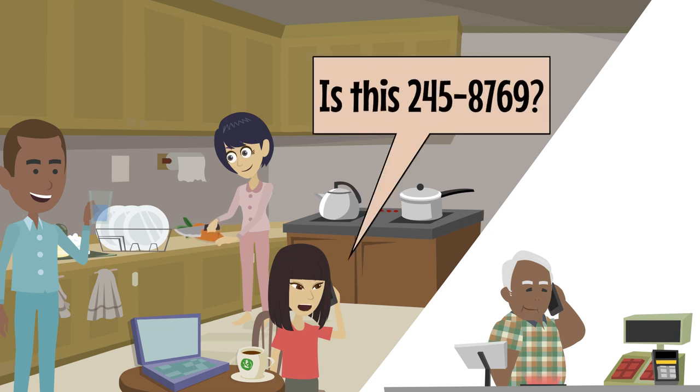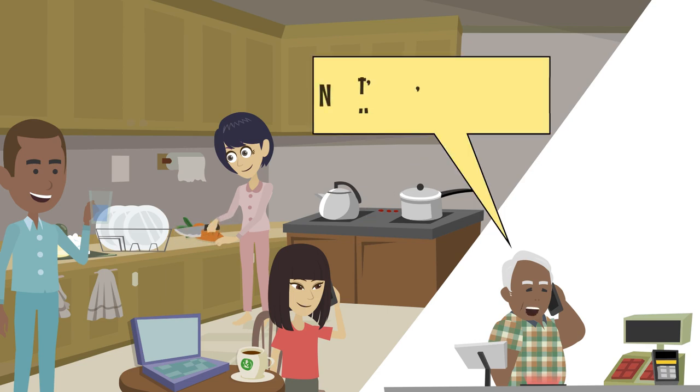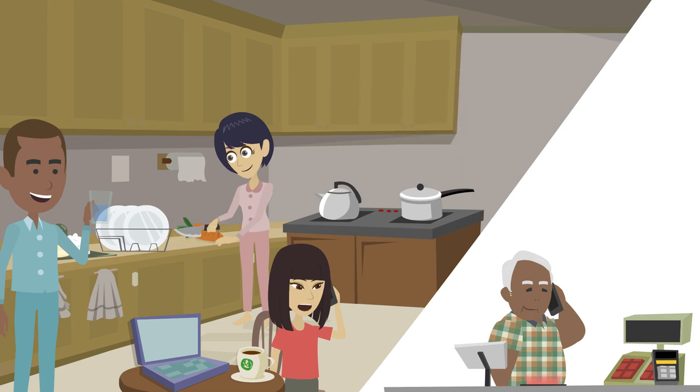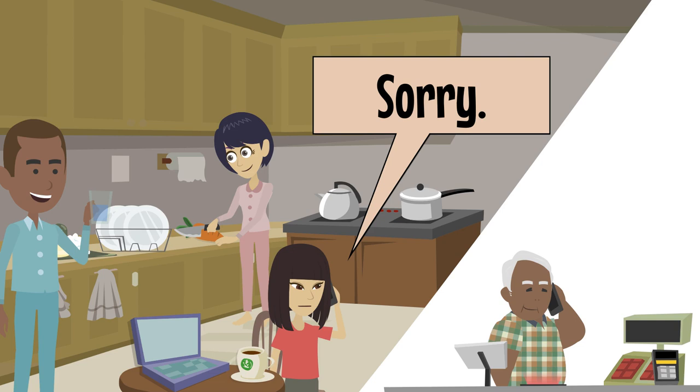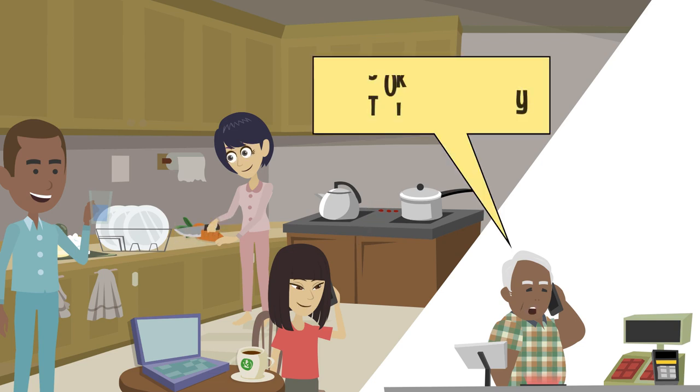Is this 245-8769? A man. No, it isn't. It's 245-8768. Mona. Sorry. A man. That's okay. Goodbye. Vocabulary.